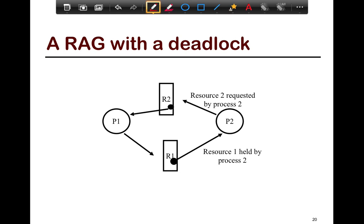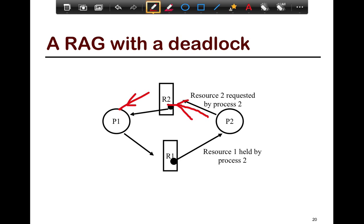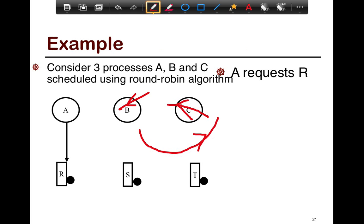Here is a resource allocation graph with deadlock. We have two resources, each with one instance. P2 has requested resource 2, which is held by resource 1, and P1 requests R1 — there is a cycle in this graph, indicating deadlock. Now consider three processes — this is where the power of the resource allocation graph shows through. When you have more than one resource and more than one process, it's very easy to visualize cycles in the graph.